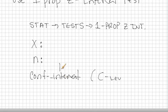I'm sorry, that should be confidence level there. My apologies. So your calculator should refer to this as C level. Once we enter in these values, we can calculate our confidence interval.